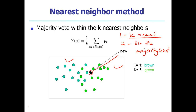K could take any value - it could be 1, 2, or 3. Let's assume k equals 3. We find out what are the closest three circles to the new circle for which we want to predict. We use Euclidean distance to find out which ones are the closest. The majority count says that out of the three circles, two of them are green and just one is brown, so the majority is green.